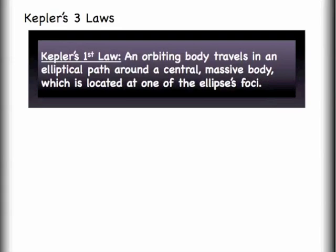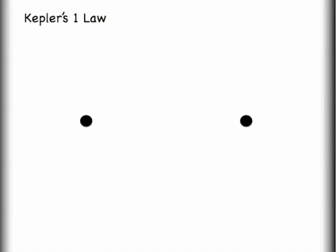Kepler's first law states that an orbiting body travels in an elliptical path around a central massive body, which is located at one of the ellipse's foci. Let's make sure we understand what we're talking about here, and to start, we're going to review what an ellipse is.